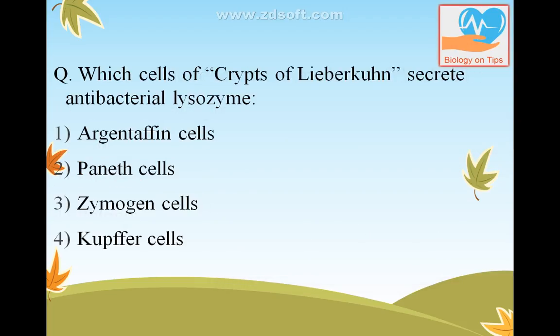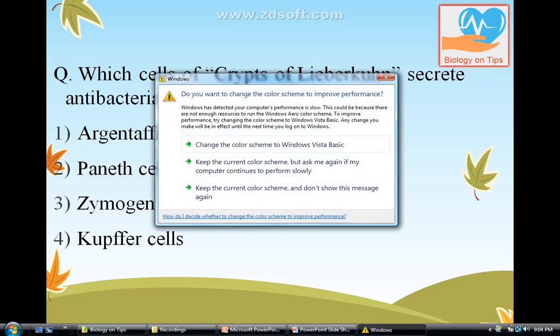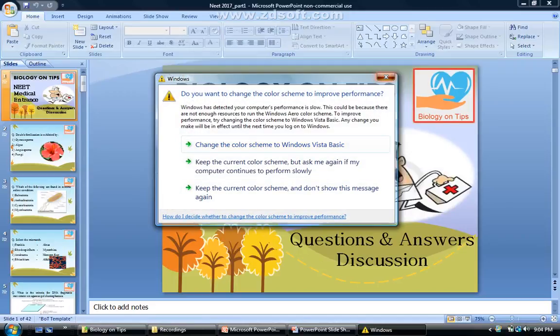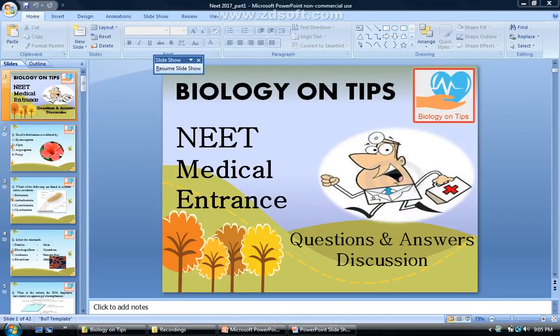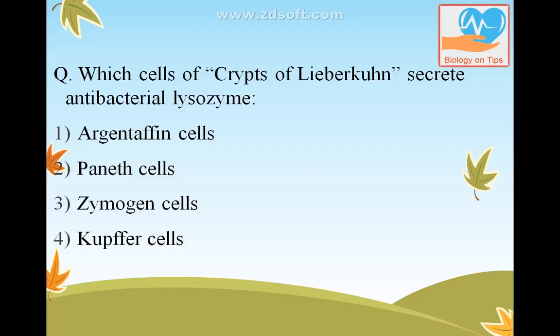Which cells of the crypts of Lieberkühn secrete antibacterial lysosomes? The answer is Paneth cells.